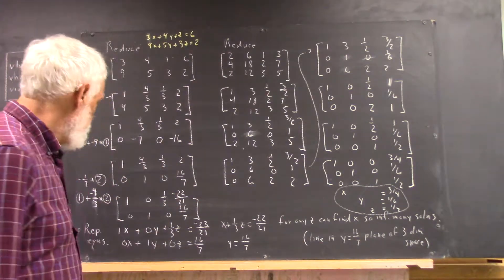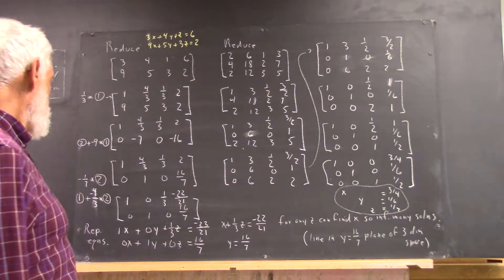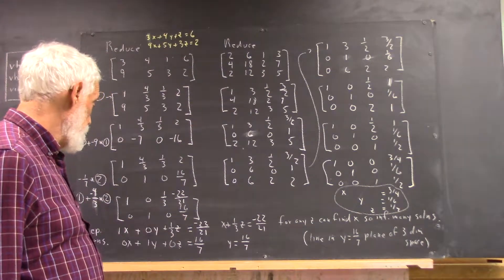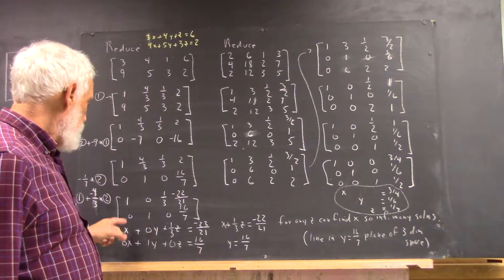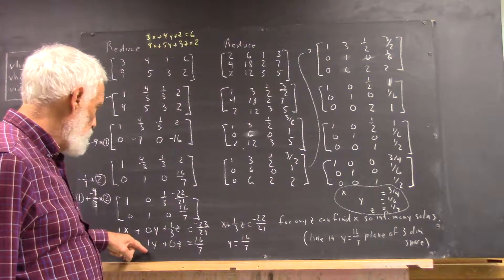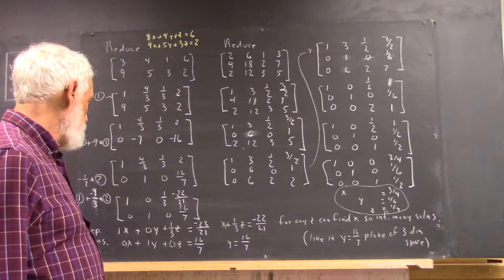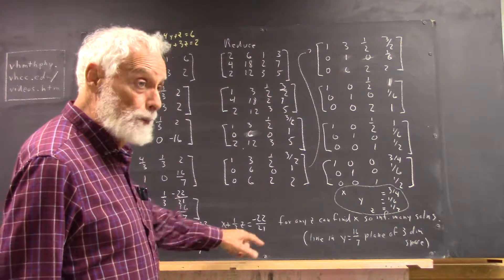What's our solution? Well, our solution is we actually have a number for y. This tells us that y is 16 sevenths. Now that's, of course, 0x plus 1y plus 0z equals 16 sevenths. But that just comes down to y equals 16 sevenths.